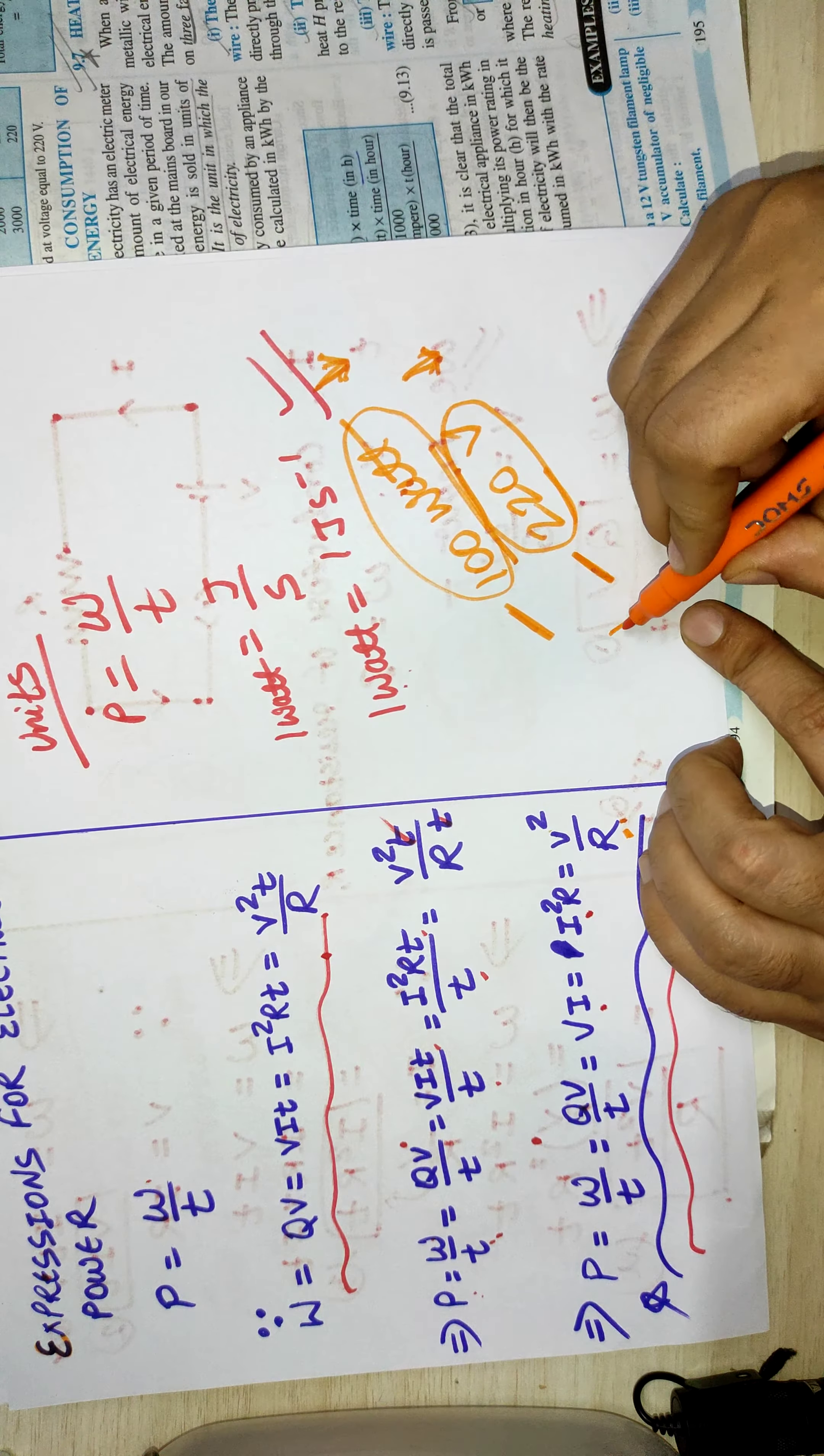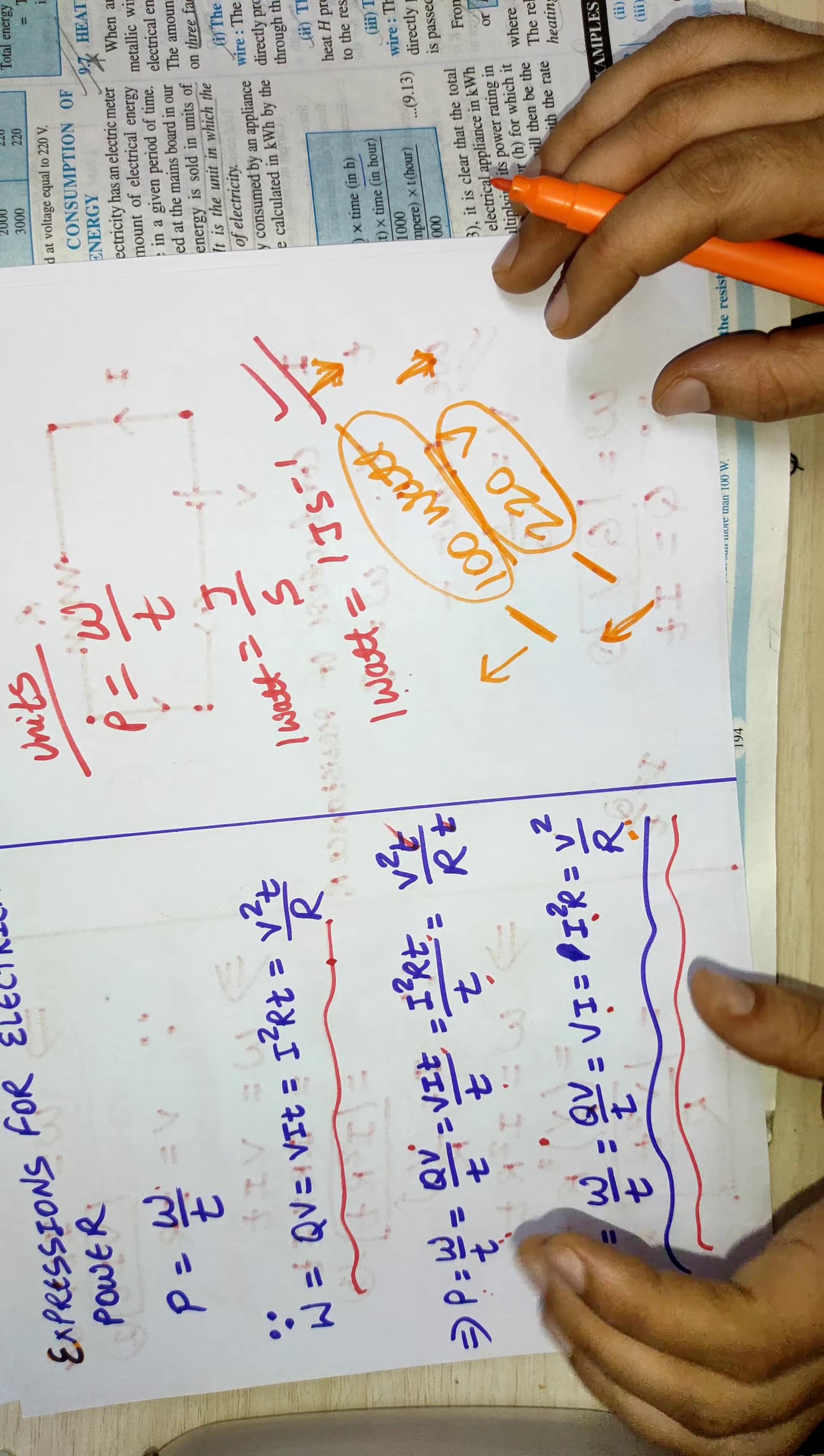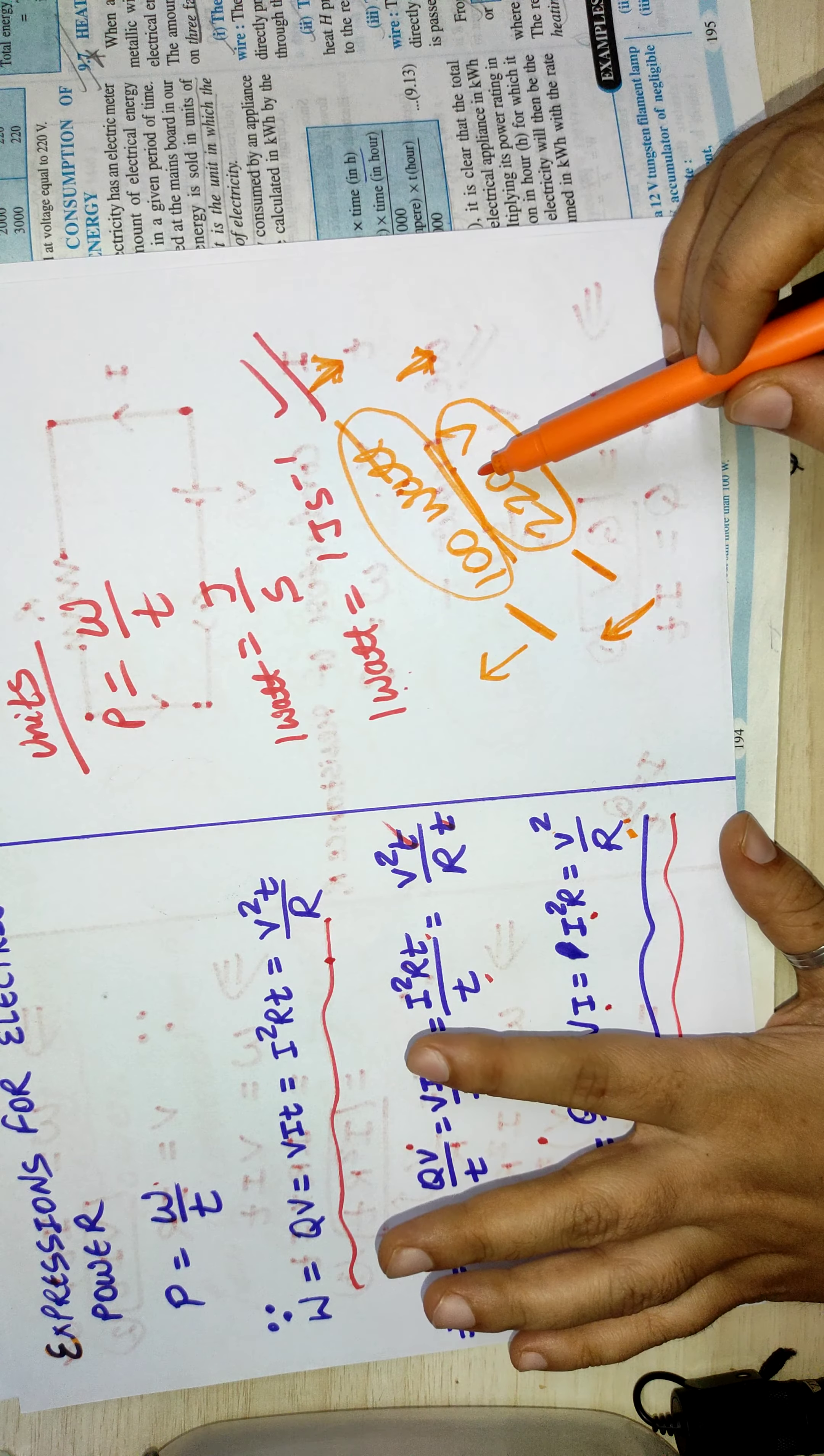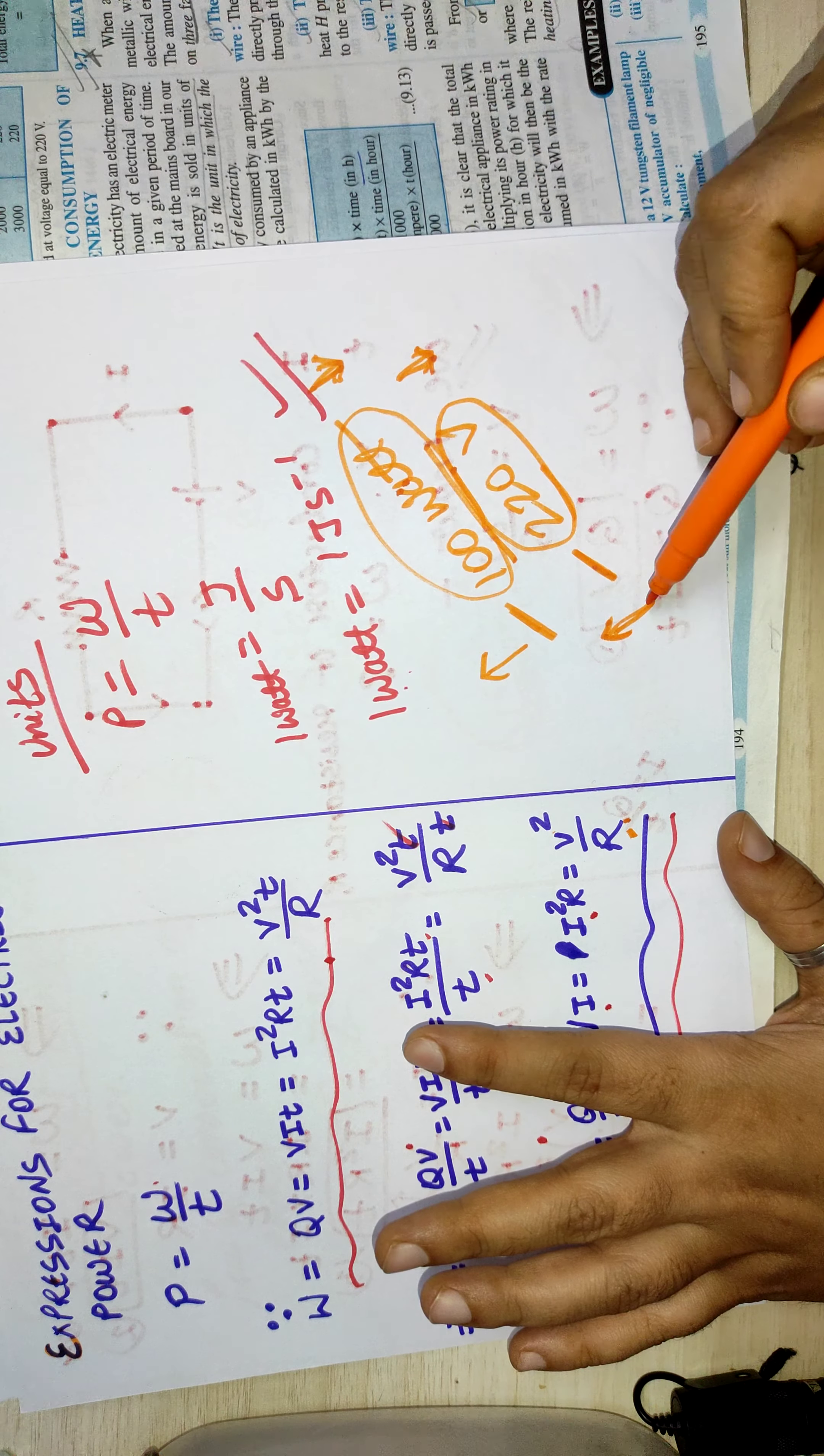But if the bulb is connected at a voltage higher than this, then that bulb will consume more power and the bulb will glow more brightly. So if the exact rating is followed, the power rated on the appliance will be consumed. If the voltage is less, the power consumed will be less. If the voltage is more, the power consumed will be more.